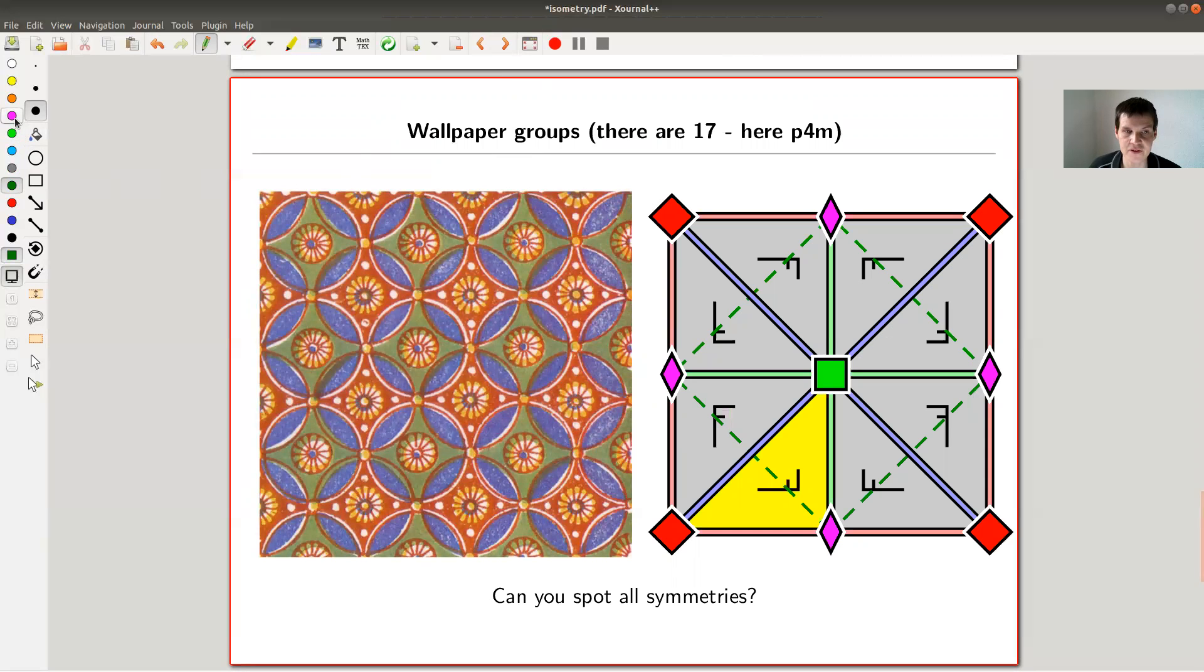So isometries are the length preserving maps between your spaces where you have a notion of a length, like inner product space. And isometries are, as I said, studied implicitly, at least in classical geometry for thousands of years. So this picture here is actually from an Egypt grave, I think. So this is very old. And this is one of the so-called wallpaper groups. There are 17 of these and they have certain names. So this one here is p4m.